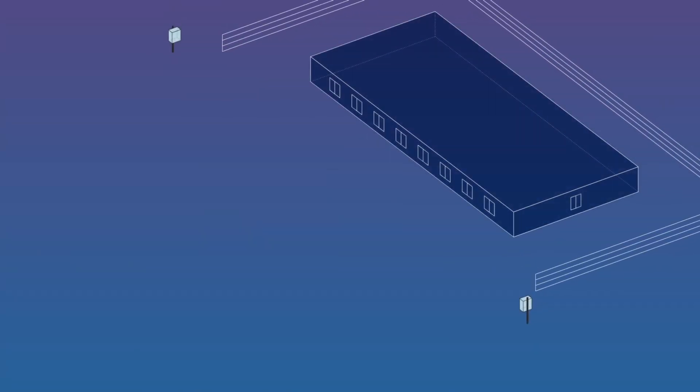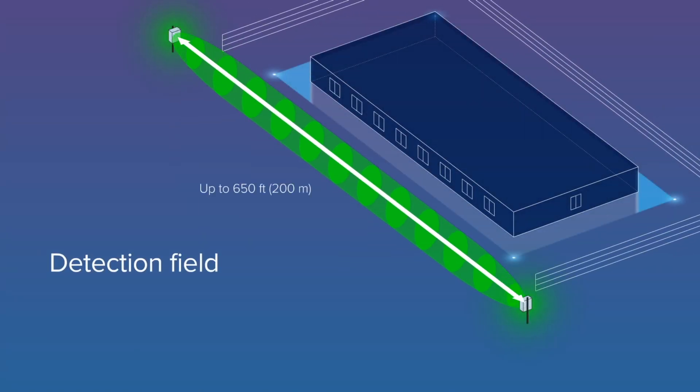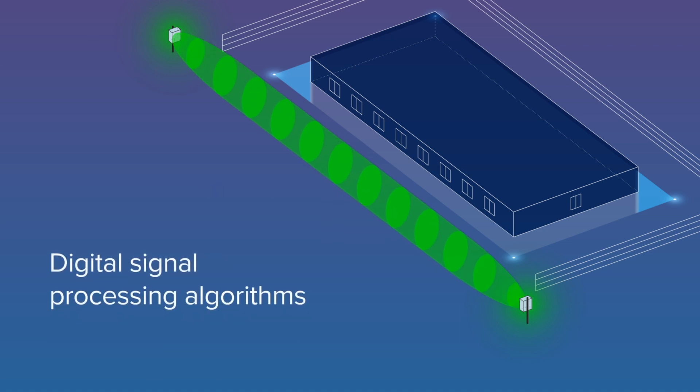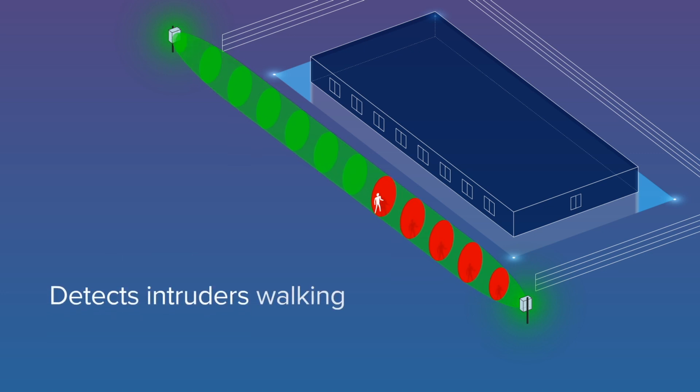An invisible electromagnetic field of energy is created between the transmitter and receiver. Digital signal processing algorithms analyze changes in the field and distinguish intruders running, walking, or crawling from background noise and environmental effects. Ultrawave provides a low nuisance alarm rate while maintaining a high probability of detection.